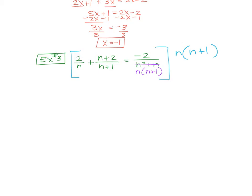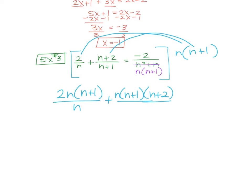What would your least common denominator be? n times n plus 1. So we're going to take this whole thing and we're going to multiply by n times n plus 1. So if we multiply here, this is going to be 2n times n plus 1 over n. Multiply here, n times n plus 1 times n plus 2. Again, I'm not going to distribute. I'm not going to foil right now. I'm just going to leave it as n times n plus 1 times n plus 2. And that's over n plus 1.